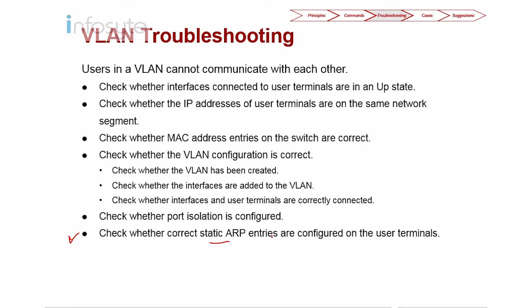Finally, check whether the correct static ARP entry is configured on the user terminal. On certain circumstances, some hosts configure ARP statically rather than dynamically. If you are not using dynamic ARP and are using static, make sure the static ARP entry is correctly configured. Otherwise, the user will not be able to communicate from one PC to another, assuming all other configuration is correct.